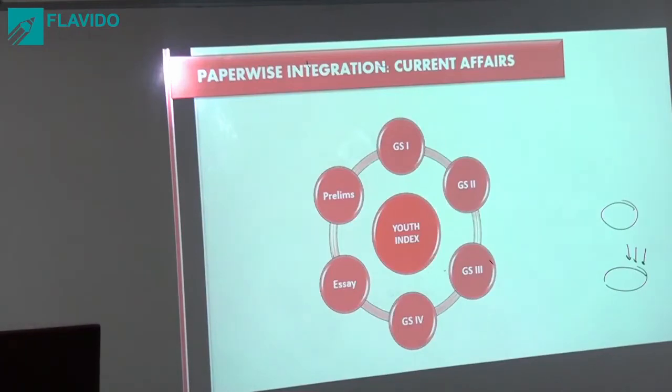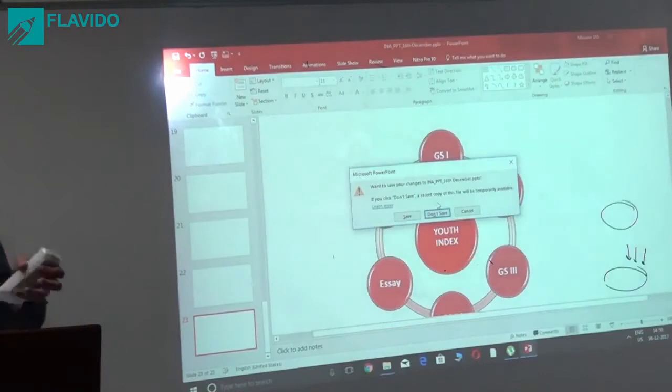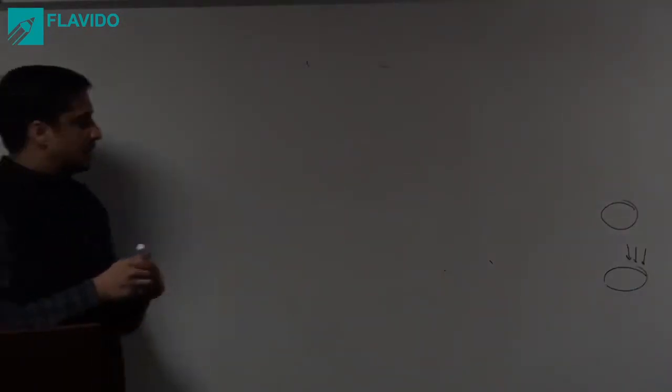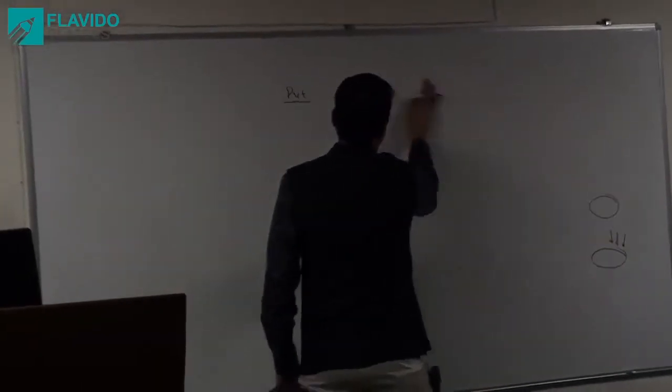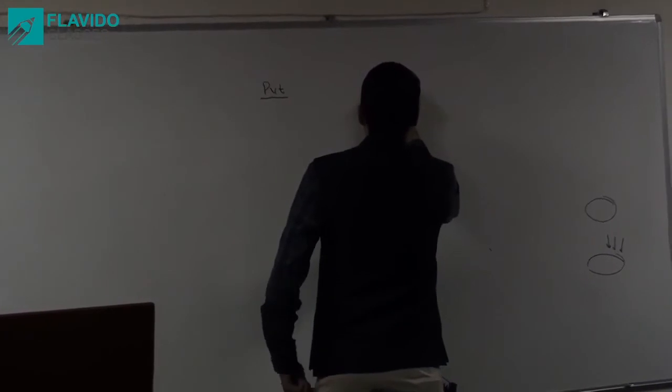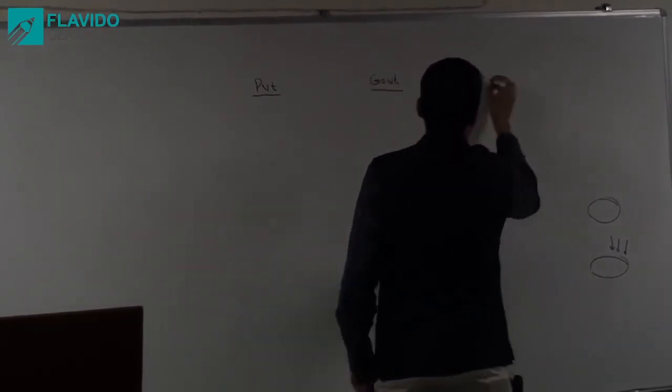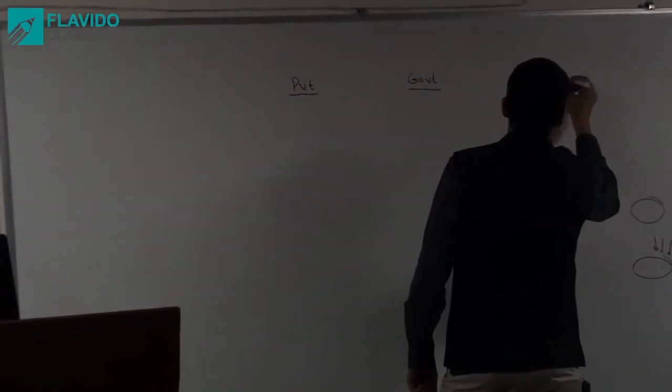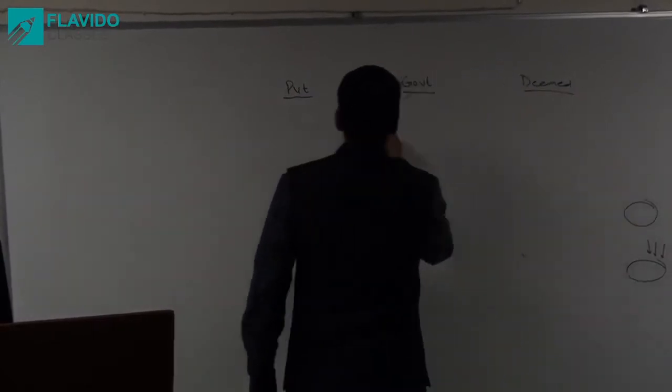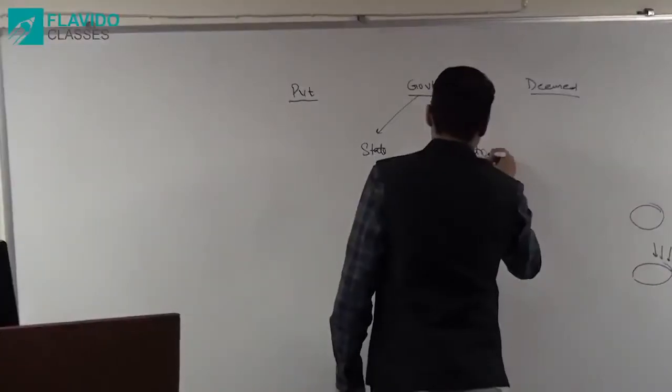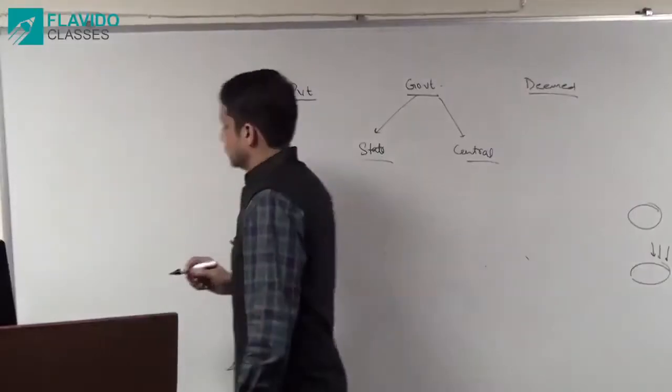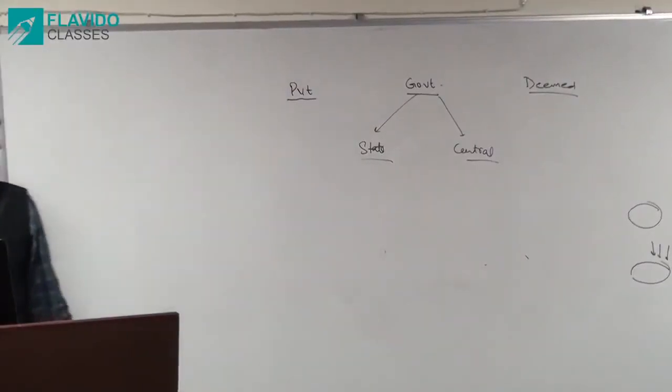Then we have the National Testing Agency. So at present, private universities, this is for the higher education. Then we have government and we have deemed universities. In case of government, we have state and we have central. So these are four, five types of universities that we have.